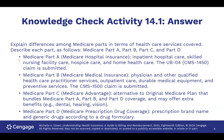Part A is the entitlement — this is the hospital insurance. You need to work a certain number of years and be over age 65. It covers inpatient care if you're admitted overnight to an acute care hospital, but it also covers skilled nursing facility, hospice, and home health. There are two different claim forms: the UB04 for facility charges, and the 1500 form for physician charges.